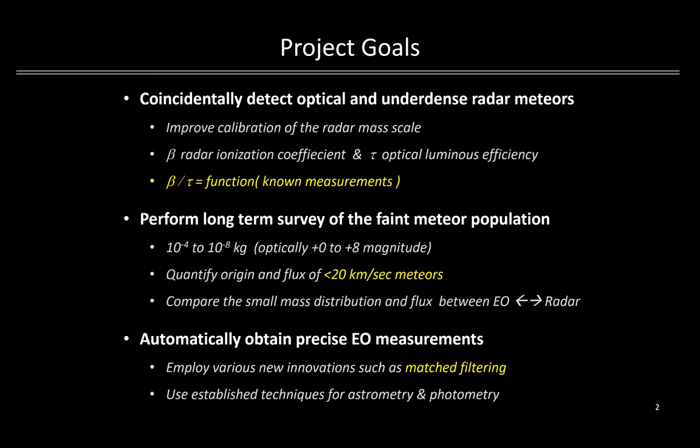Thus, for example, by obtaining tau by other means, one could narrow down the range of optical ionization coefficients. Given the system collects much fainter meteors in the optical than other surveys, we hope to obtain good statistics on the sporadic component down to a microgram in mass, and specifically explore the origin of flux of meteors with entry velocities below 20 kilometers per second — a detection speed requirement that has been met by the system.